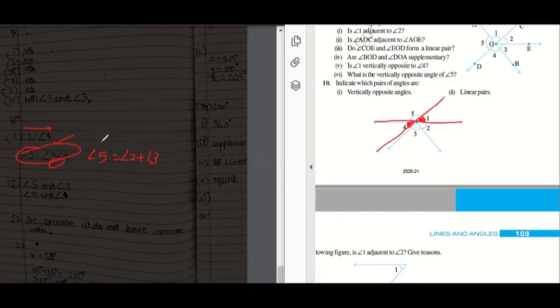For the next thing, linear pair. The sum should be 180, that means a straight line should be there. Angle 1 and 5, so how to write: angle 1 plus angle 5 equals to 180 degrees.